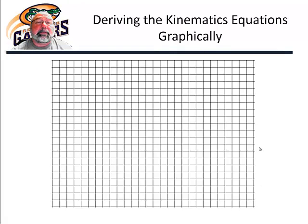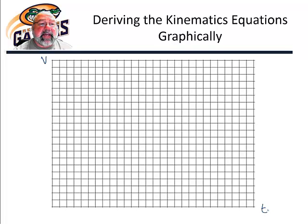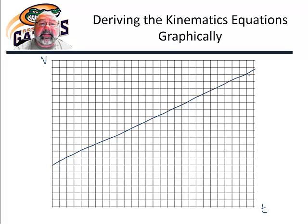I'm going to derive the basic kinematic equation, which is actually the third equation, using a velocity versus time graph. We're going to derive the equations for uniform acceleration, which means that the slope of our velocity is going to be constant. So I'm going to draw a velocity that's increasing at a constant rate — uniform acceleration.